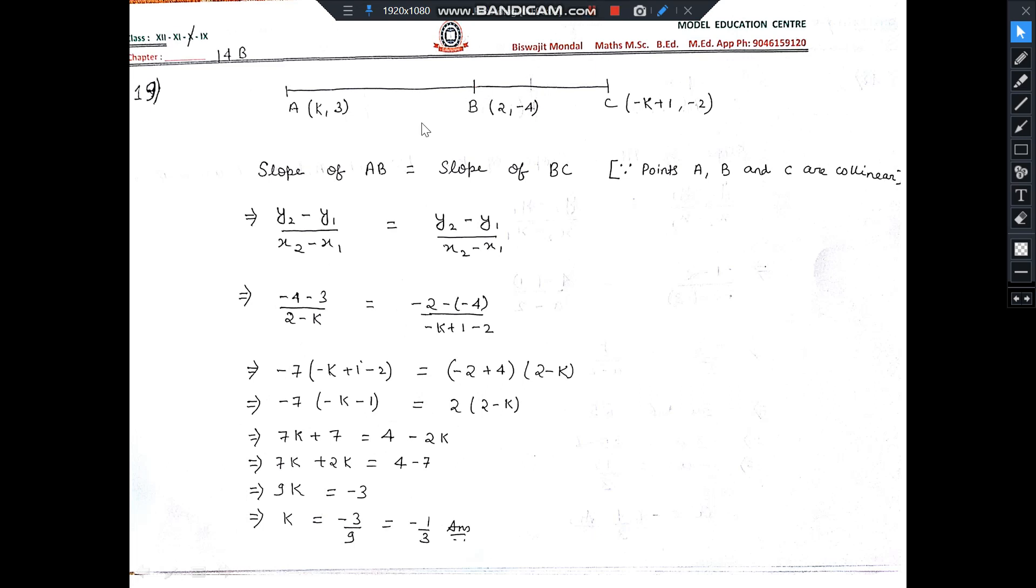Let us do number 19. The points are: K(3, ?), B is given as (2, -4), and another point C is given as (-K+1, -2).